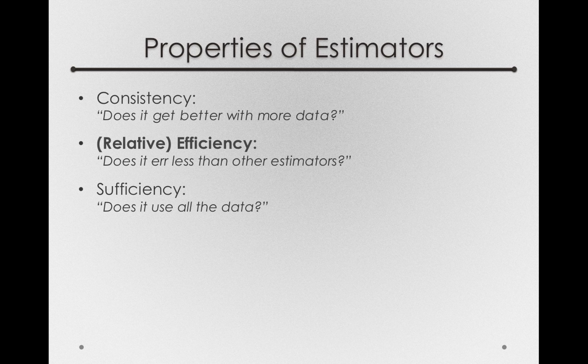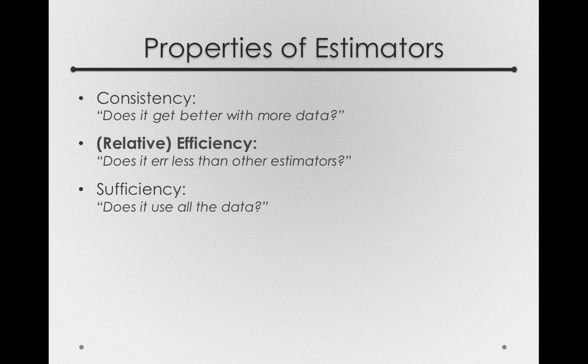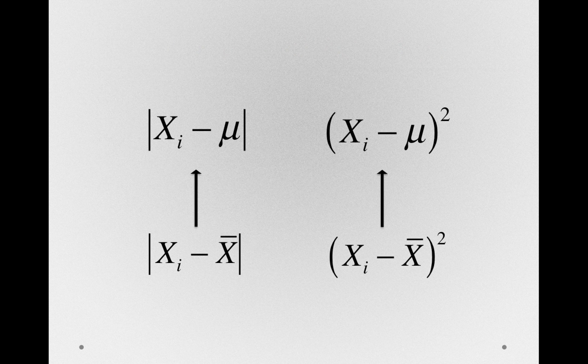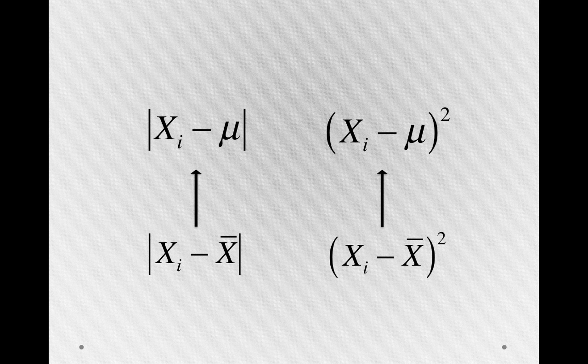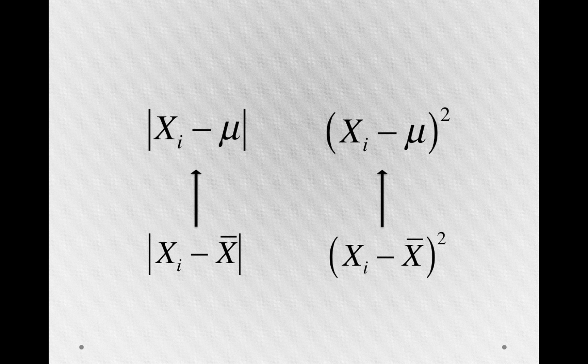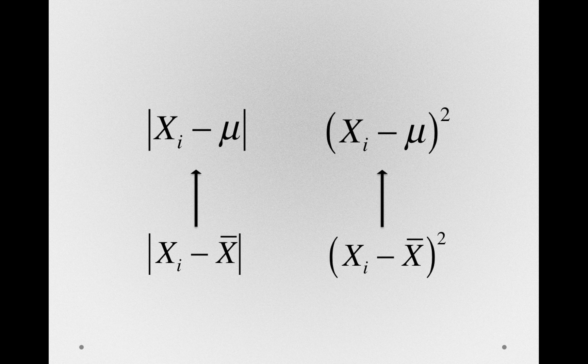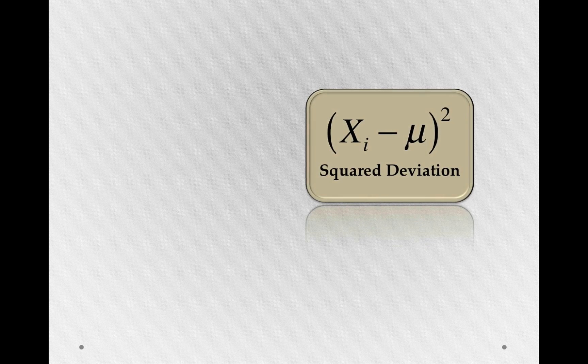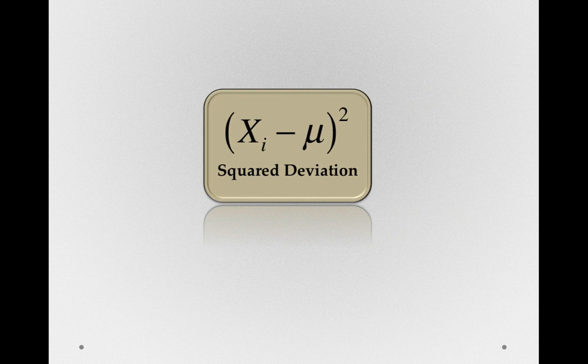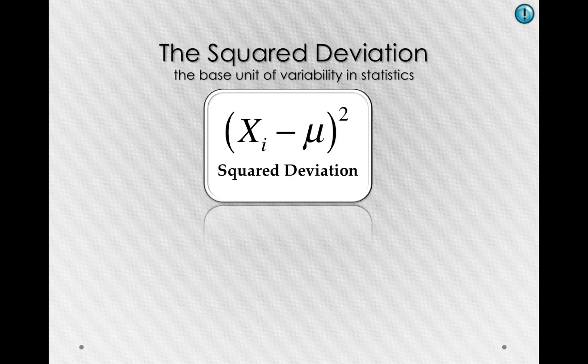Now efficiency, as I mentioned, was the property that Eddington and Fisher were arguing about. And what Fisher was able to show was that his version of this statistic, the deviation squared, actually was more efficient—it had less error in repeated samples than the absolute deviation. So after Fisher's 1920 paper, it was pretty much accepted that the squared deviation should be used as the basic unit of variability in statistics.